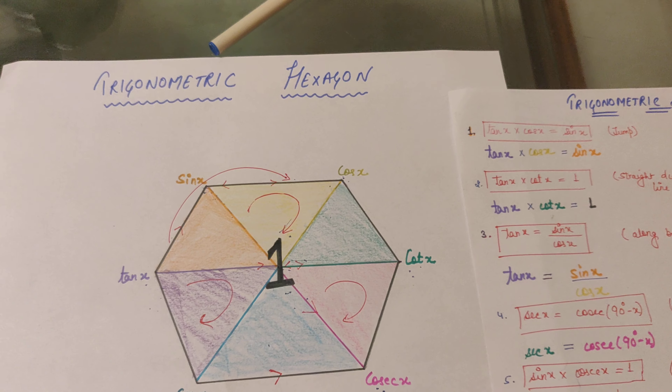So this was all about the magical hexagon — you can derive all the basic trigonometric identities without remembering any of them. It is a very helpful tool. Keep watching, keep liking, and keep subscribing. Thank you so much!